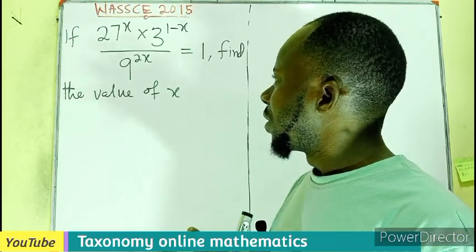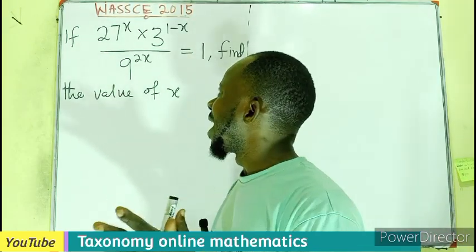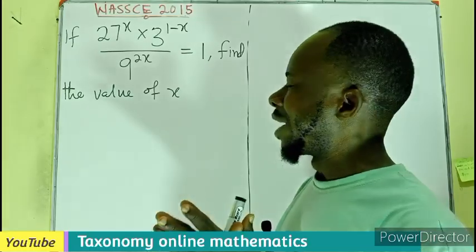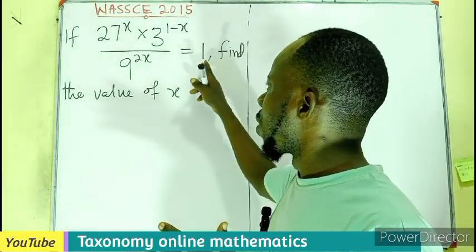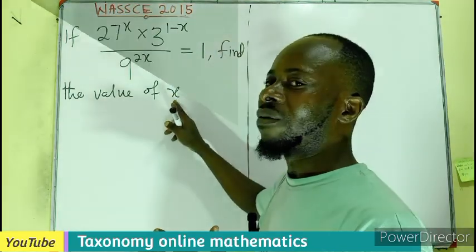If 27^x × 3^(1-x) divided by 9^(2x) equals 1, we have to find the value of x.